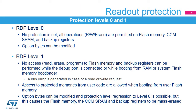When the lowest RDP level, level 0, is set, the device has no protection. All read or write operations — if no write protection is set — on the flash memory, the CCM SRAM, and the backup registers are possible in all boot configurations, such as flash user boot, debug, or boot from RAM. Option bytes are also changeable at this level. Level 0 is the factory default level.